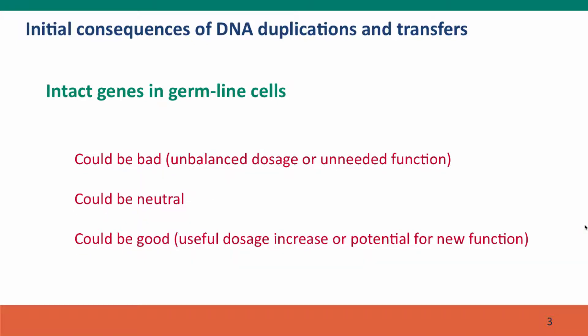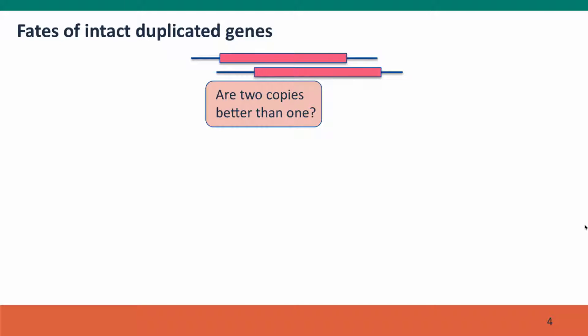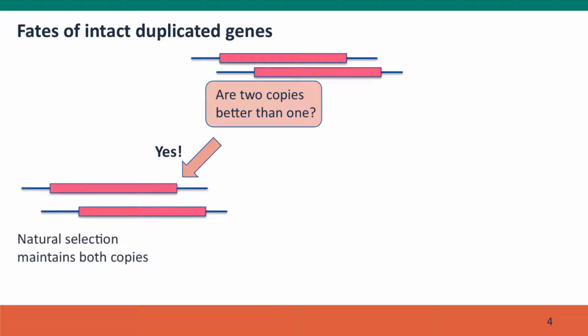Here's a schematic of our duplicated genes, shown as if they were on different chromosomes, but they could be on the same chromosome — it wouldn't matter. The question we ask is: are two copies of this gene better than one? If the answer is yes, natural selection is going to favor maintaining both copies and will select against any mutation that causes a defect in one of the new copies.